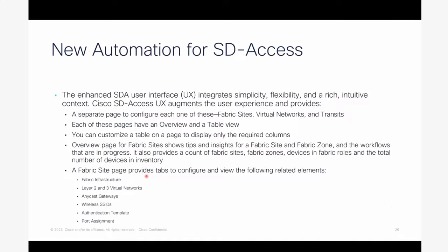Moving to SecOps — we have more enhancements on SD Access, though major changes were made in 2.2.5. For this new release, the main thing is the enhanced SDA user interface, which is simpler, more flexible, and more intuitive. You will have separate pages to configure virtual networks, transits, and fabric sites. Each page has an overview and table view, which you can customize to display the columns you want. The fabric site overview page shows tips and insights for fabric site and fabric zone creation, with simplified workflows.